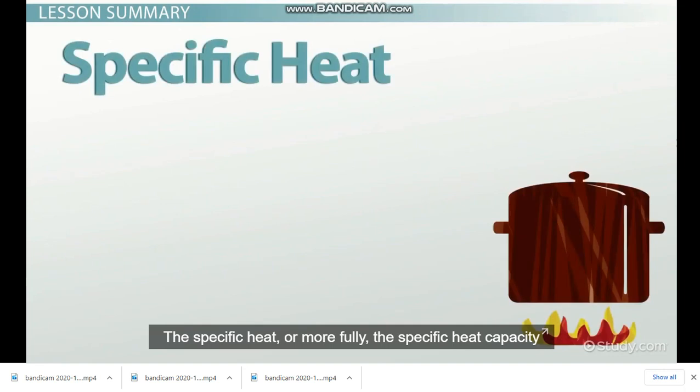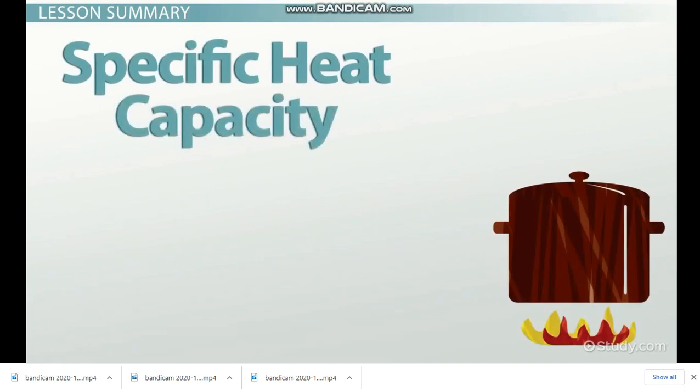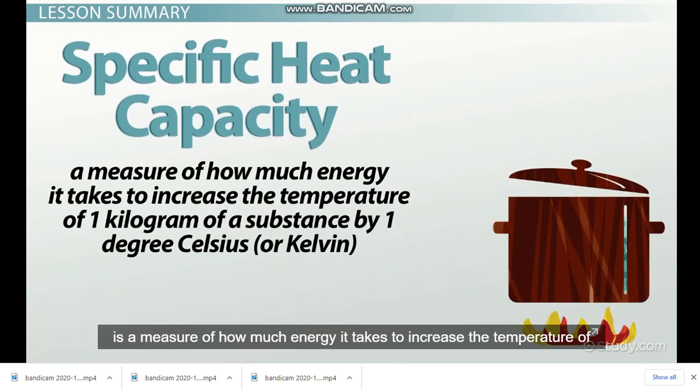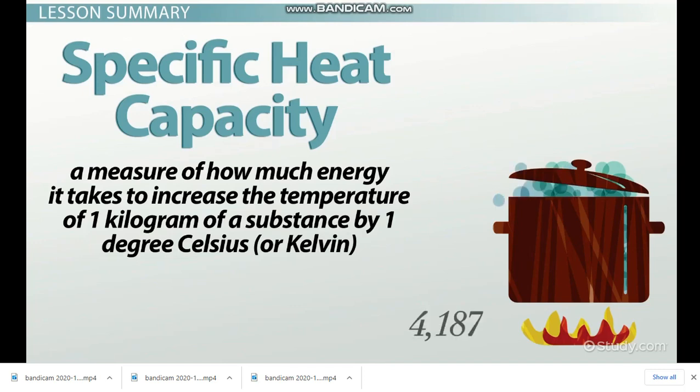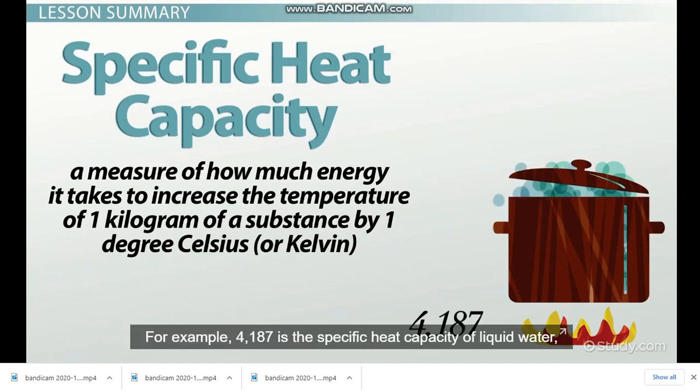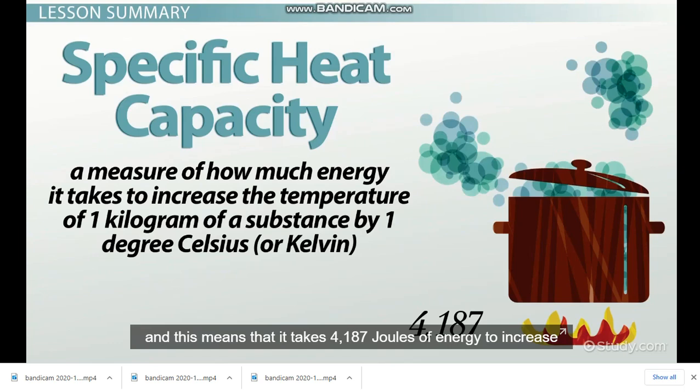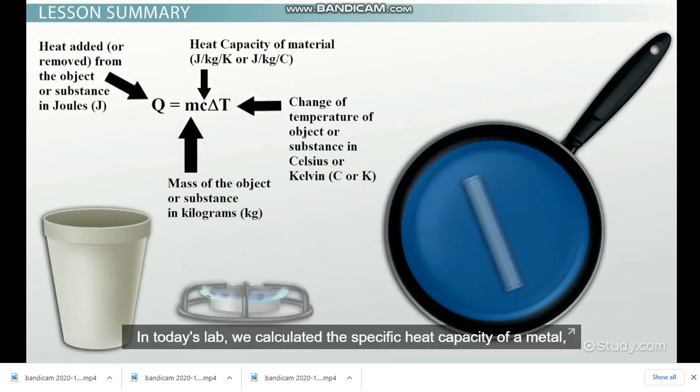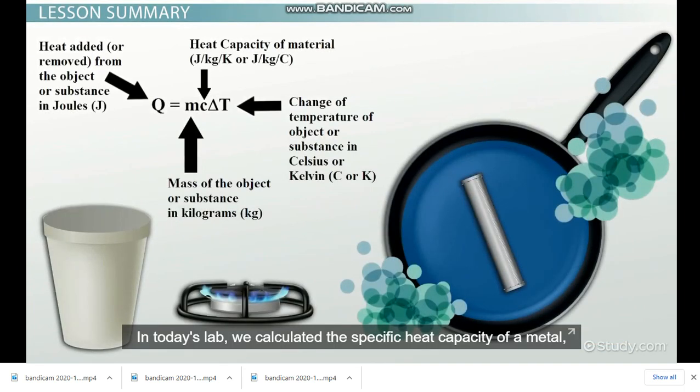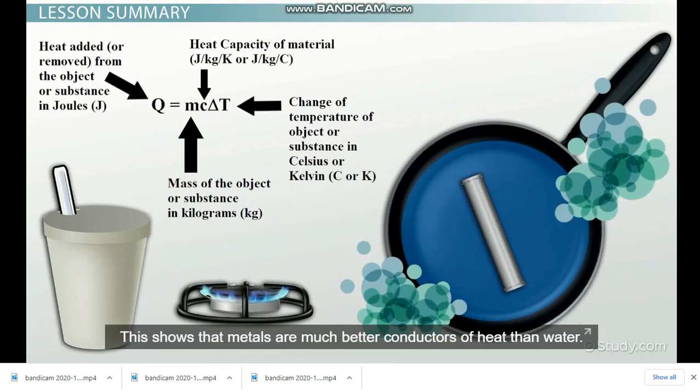The specific heat, or more fully the specific heat capacity, is a measure of how much energy it takes to increase the temperature of one kilogram of a substance by one degree Celsius or Kelvin. For example, 4187 is the specific heat capacity of liquid water, and this means that it takes 4187 joules of energy to increase the temperature of one kilogram of water by one degree. In today's lab, we calculated the specific heat of a metal and found that it was much lower than the 4187 value of water. This shows that metals are much better conductors of heat than water.